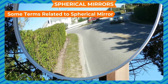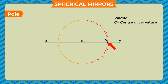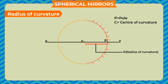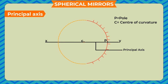Some terms related to spherical mirrors: The geometrical centre of a spherical mirror is called its pole. The centre of the sphere of which the mirror forms a part is called the centre of curvature. The line joining the pole and the centre of curvature is the radius of curvature. An imaginary line passing through the pole and centre of curvature is known as the principal axis.